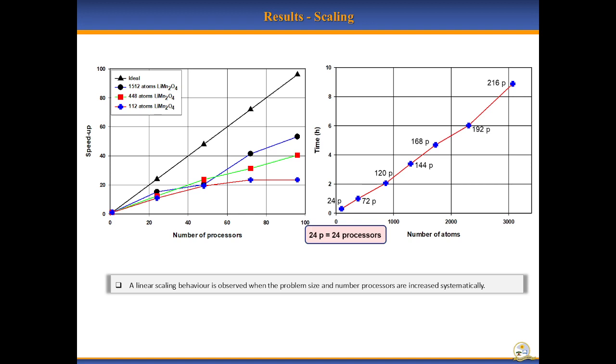We also checked on how we can efficiently allocate computing resources to avoid not getting the best out of the CHPC systems and the code during large-scale production runs. The scaling test indicates that for systems comprising of less than 112 atoms, increasing the number of processors beyond 48 does not result in less computational time, and for systems of more than 448 atoms, a steady decrease in computational time is observed. We also note that increasing problem size and the number of processors results in a linear increase in the total computing time.